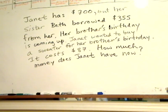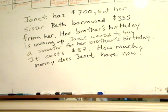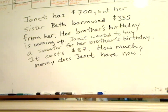Janet has $700 but her sister Beth borrowed $355 from her. Her brother's birthday is coming up, and Janet wanted to buy a sweater for her brother's birthday — it costs about $87. So how much money does Janet have now? Pause the video for a minute and see if you can solve this question.